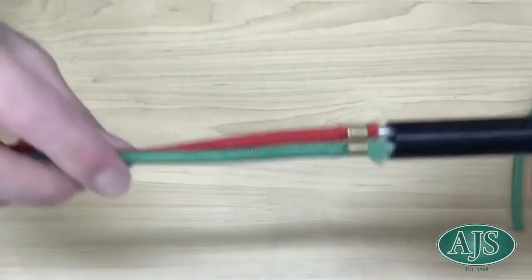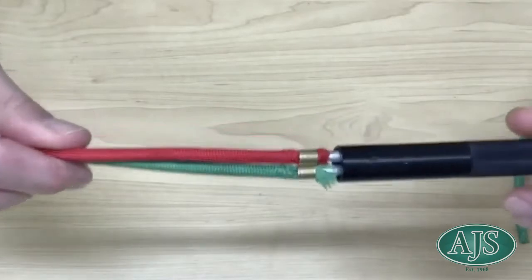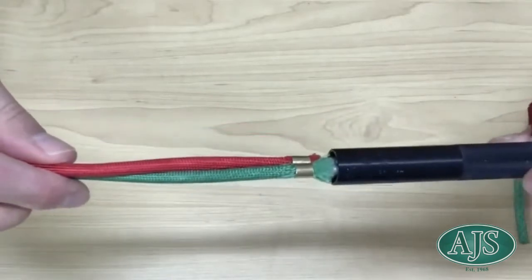You can see that these hoses have frayed near the body of the torch so we'll be performing the replacement from here.